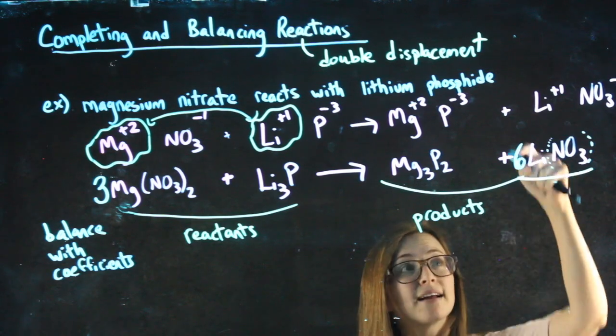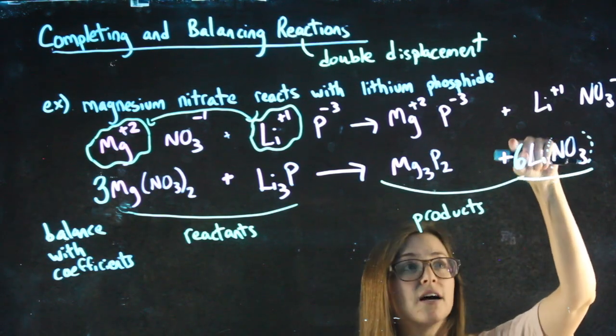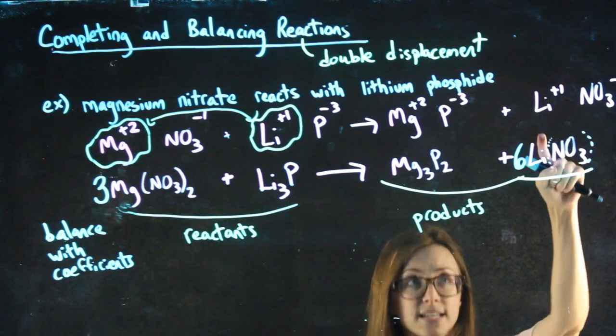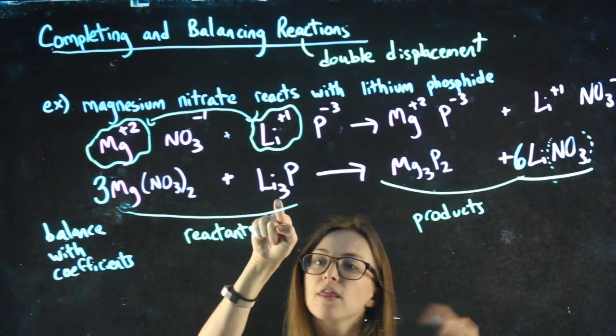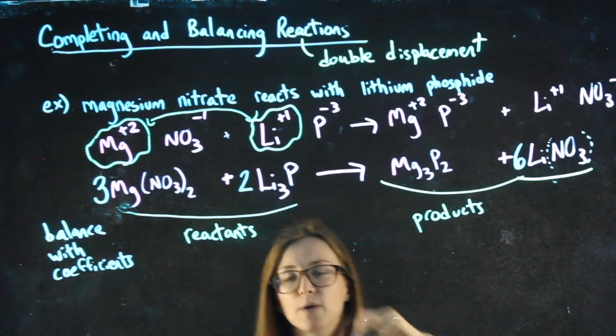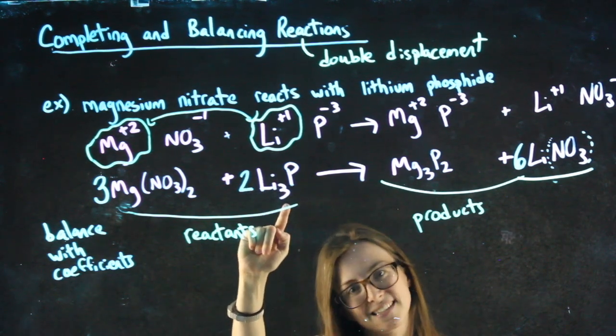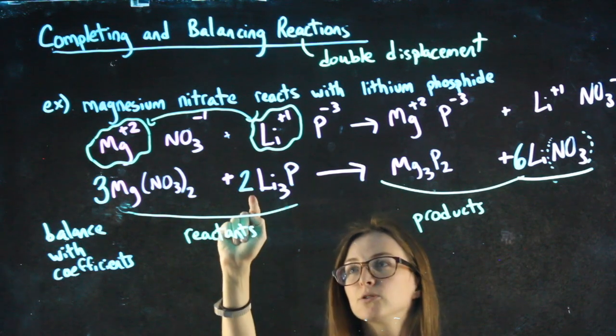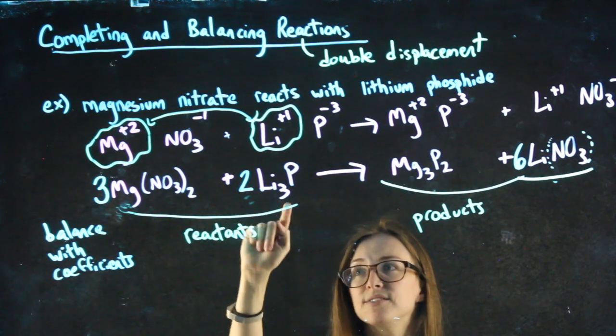Then I stay where I'm at and I say, what else does this six affect? Well, it affects the lithium. I have six lithium on the right. I only have three on the left. So to get it to six, I put a two. I don't put a six because that three is still affecting the lithium. So I put a two there and now I know I have six lithium.